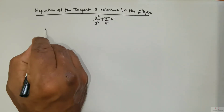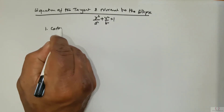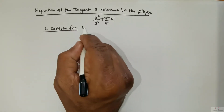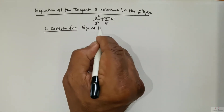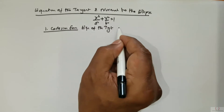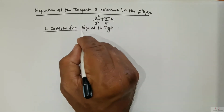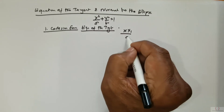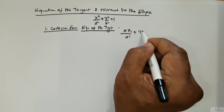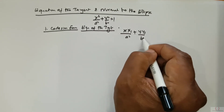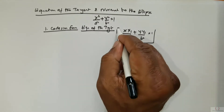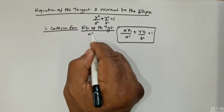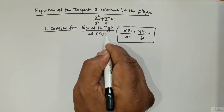In Cartesian form, the equation of the tangent is given as x times x1 divided by a squared, positive y times y1 divided by b squared is equal to 1. This is a very important equation — the equation of the tangent at a point x1, y1.